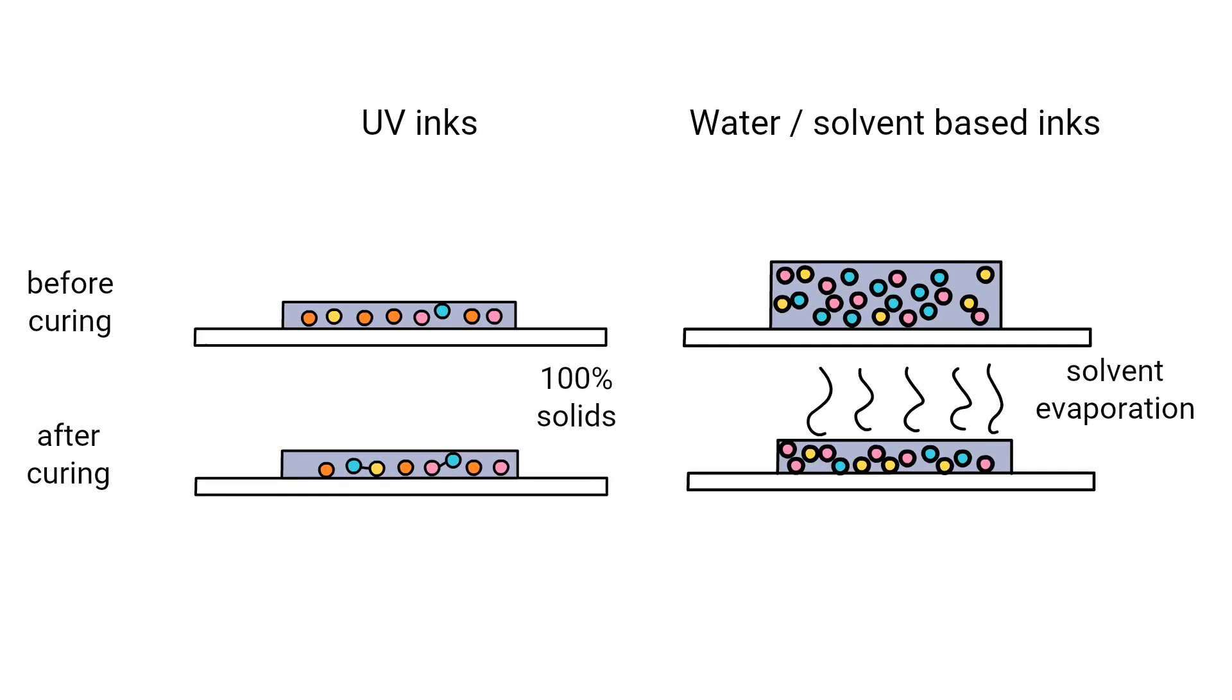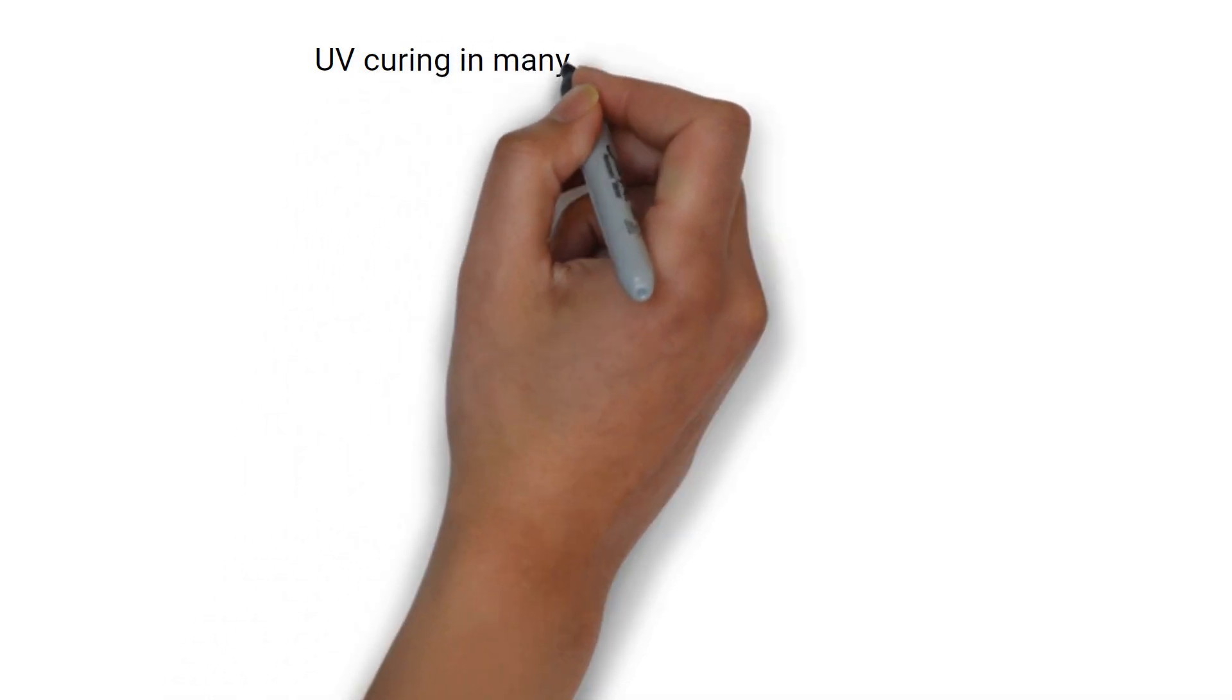With UV systems, you are also not paying for product that disappears into the sky. Putting less ink down also means a smaller dot and better dot definition, thus a better quality print. It's also not just inks and coatings that can benefit from UV curing.